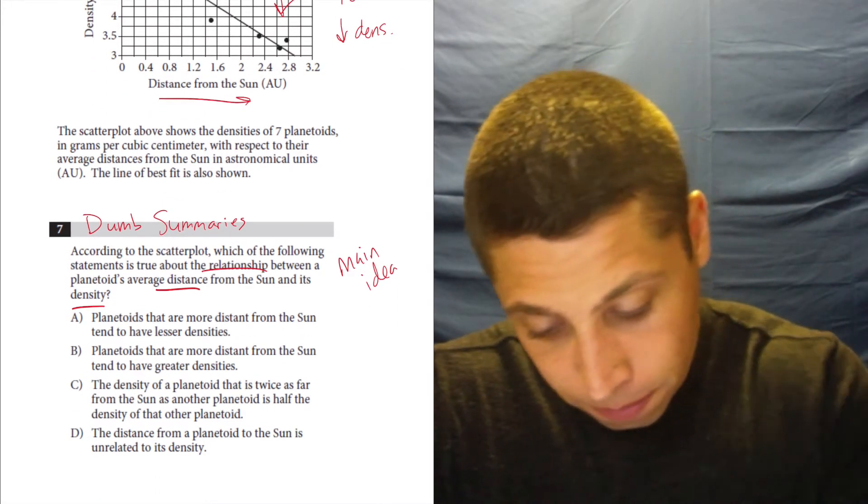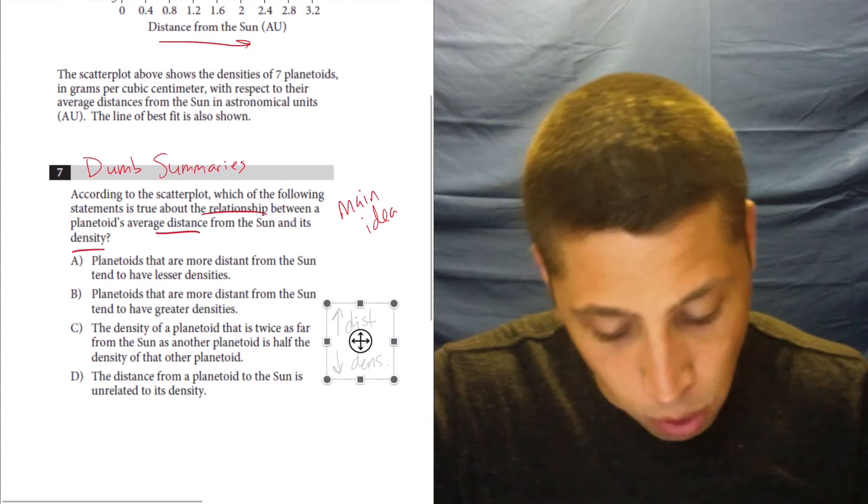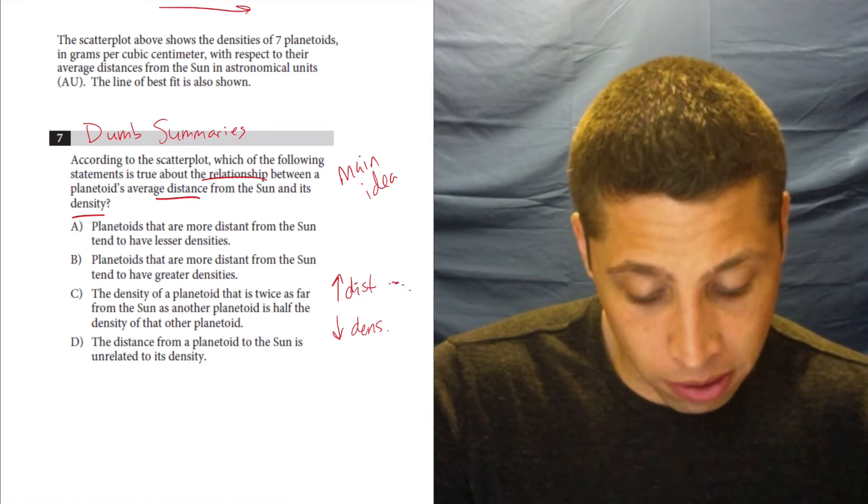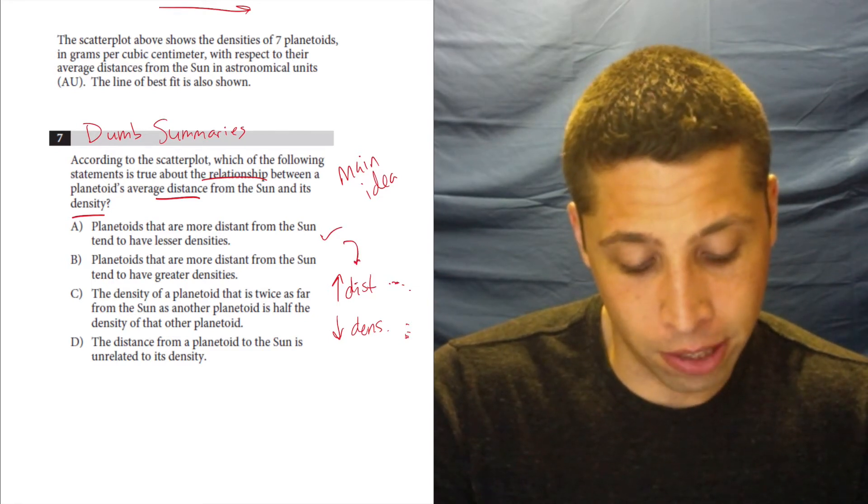Now let's go to the choices here. I'm going to bring that with me. And what matches? Choice A. Planetoids that are more distant from the sun have lesser densities. That's literally what I just wrote.